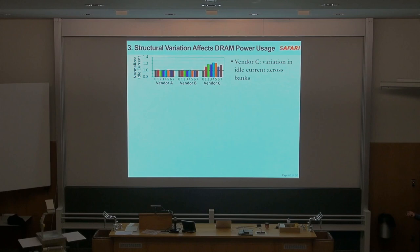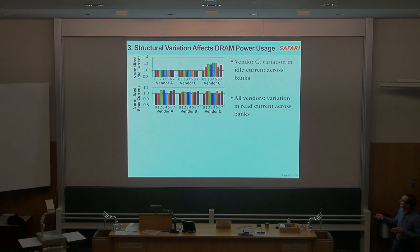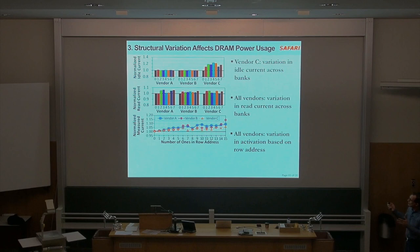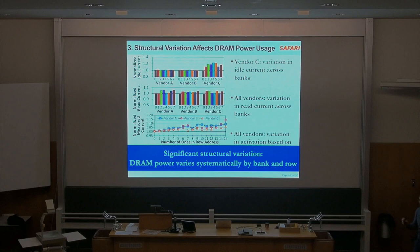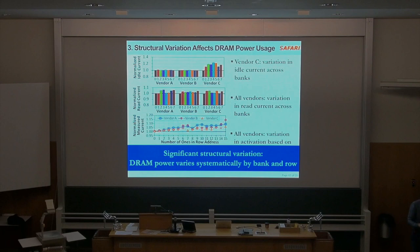There's also structural variation, as expected. There's significant variation in idle current across different banks — visible in vendor C — and variation in read current and write current across different banks. There are interesting variation patterns based on row address bits that we don't fully understand. So DRAM power varies systematically by bank and row, and maybe you can take advantage of the fact that some banks are inherently lower power by mapping frequently accessed data into those banks.